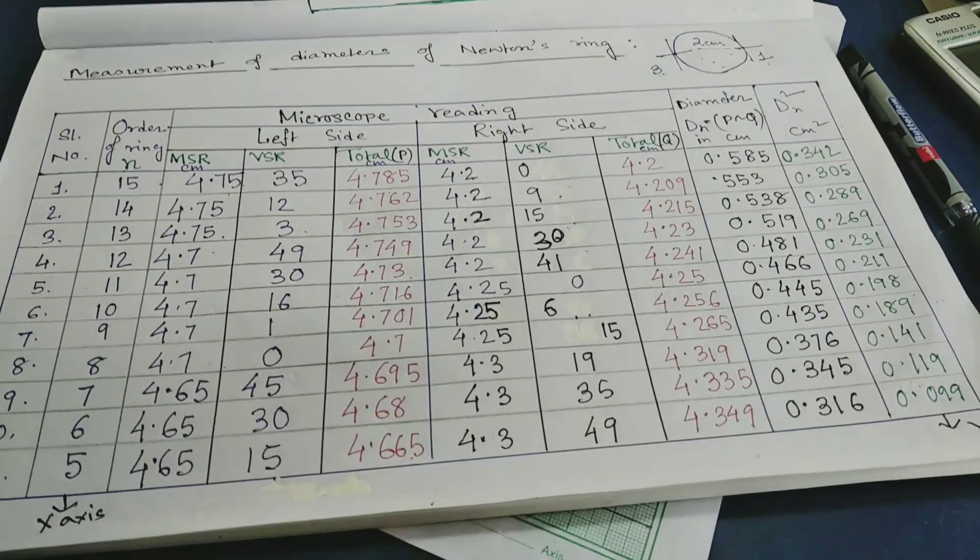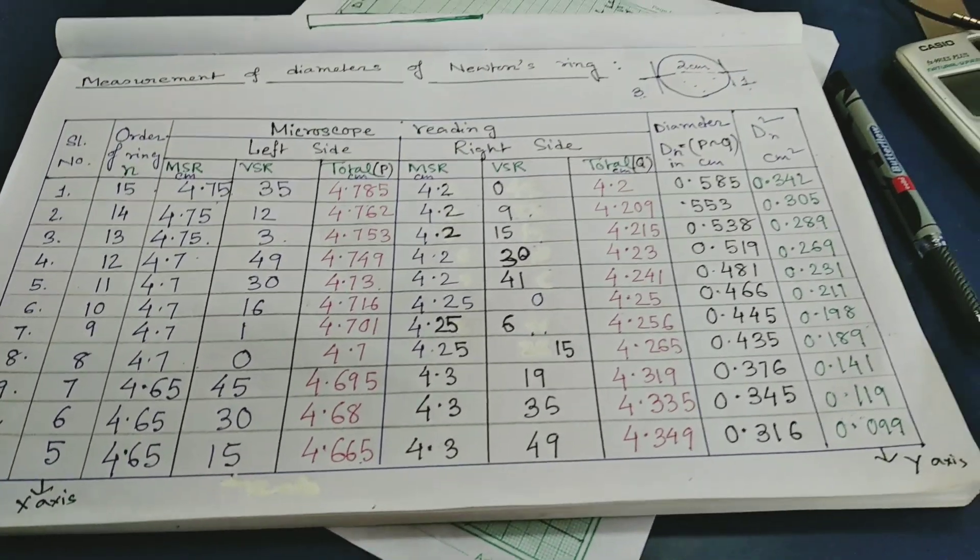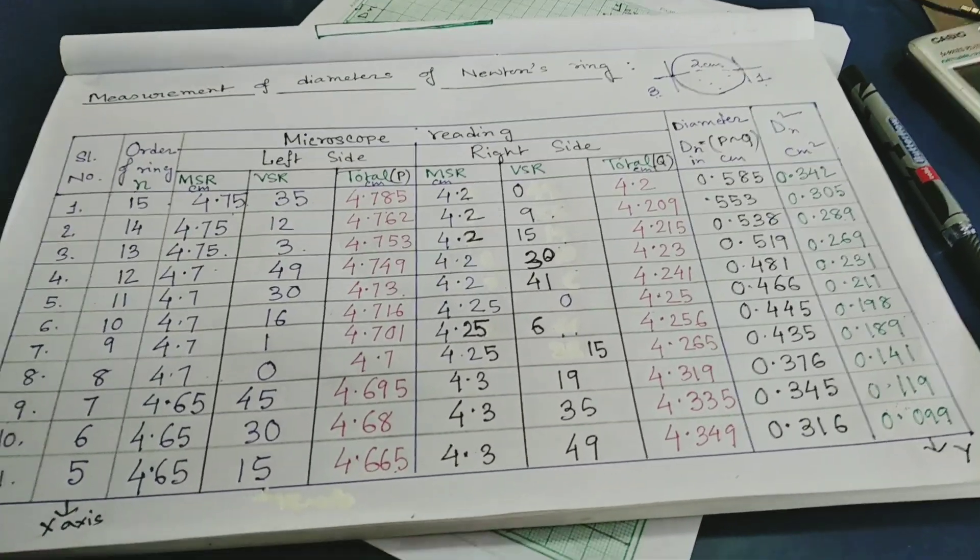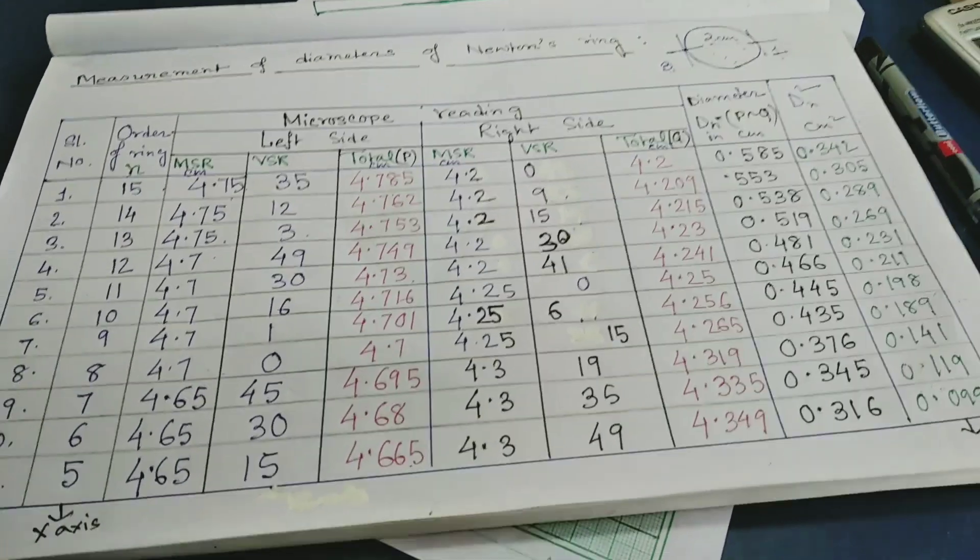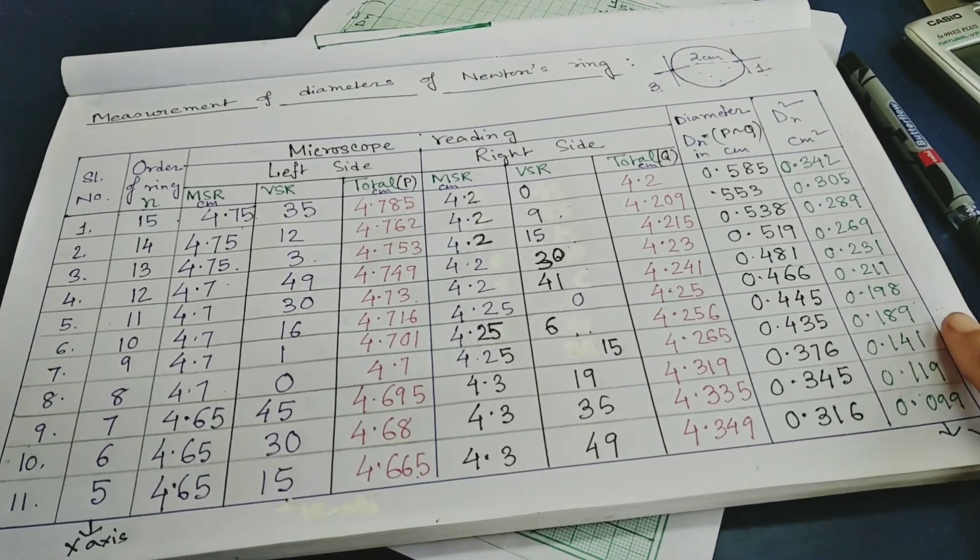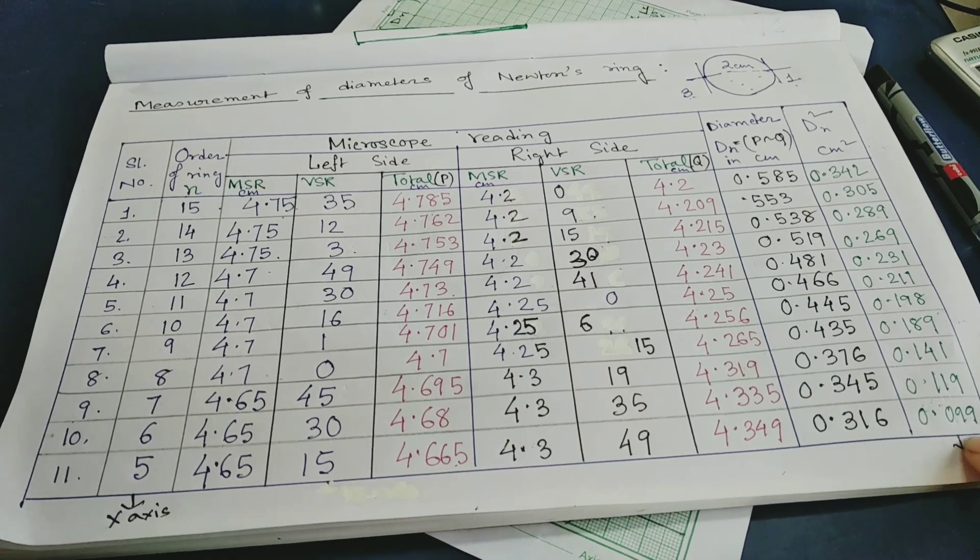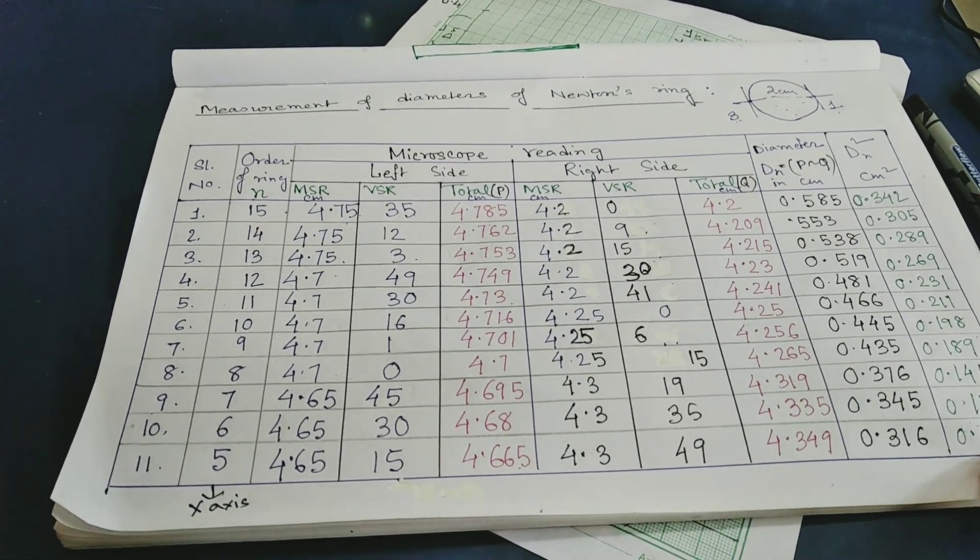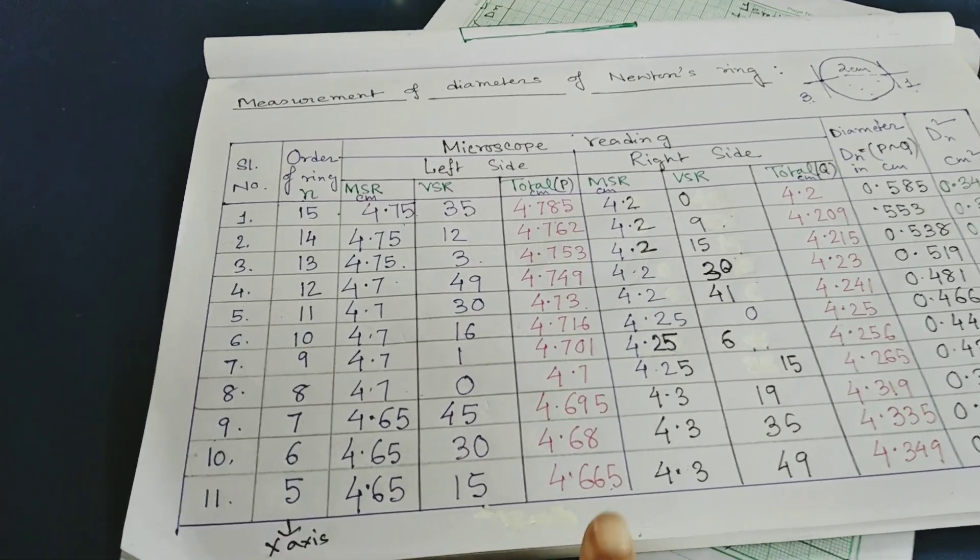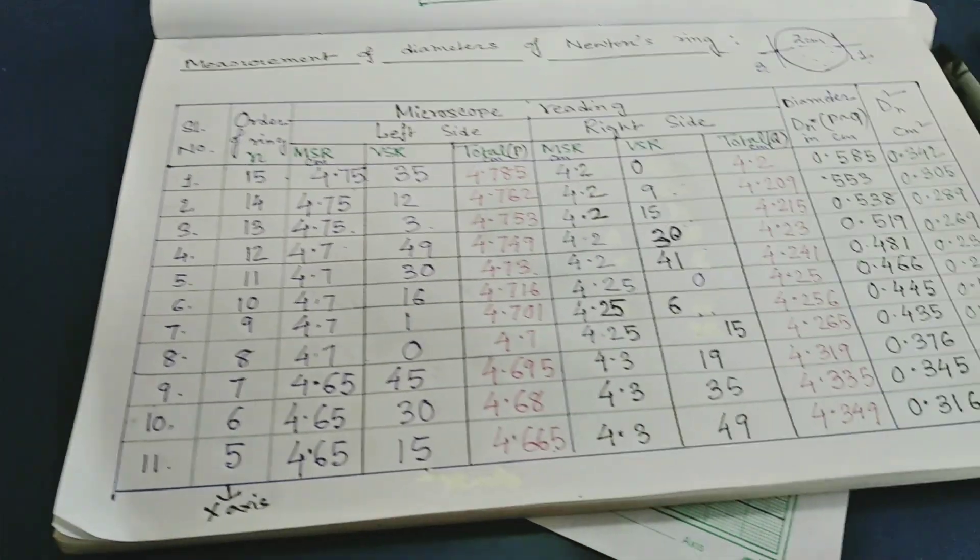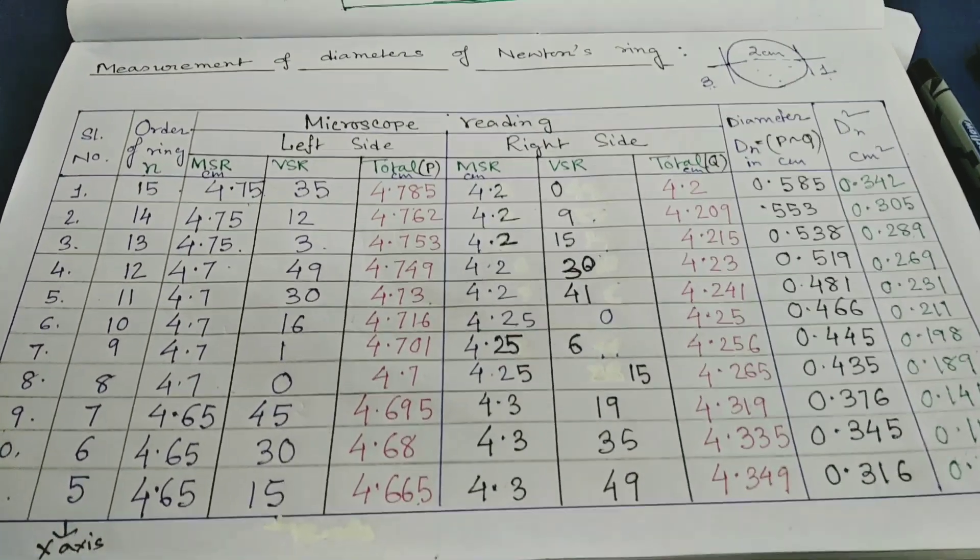After doing all the calculation from table, we need to plot a graph. Along y-axis diameter square, this column. And along x-axis order number, this column. We need to plot a full-scale graph.